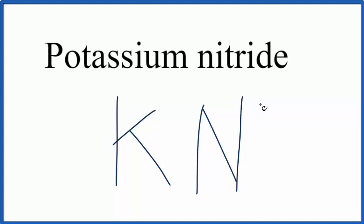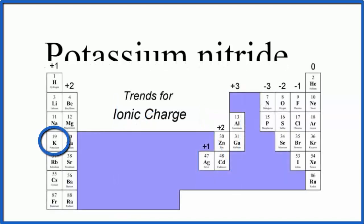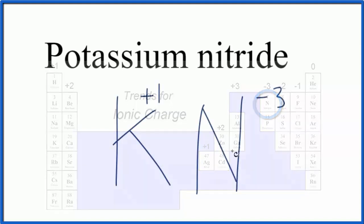So what we need to do is balance the charges. Potassium is in group 1 on the periodic table. It has a plus 1 charge. Nitrogen has a minus 3 charge. So the charges don't balance. So we need to make sure that the net charge is equal to 0.